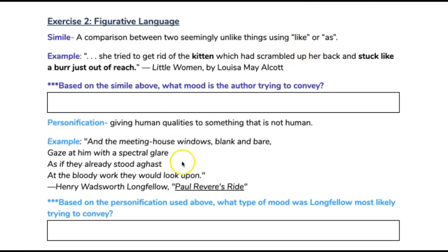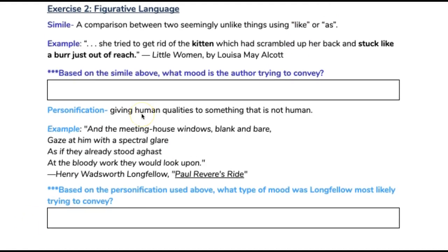Now let's look at another example — this time personification. Personification is giving human qualities to something that is not human. Here's an example from Paul Revere's Ride: 'In the meeting house windows, blank and bare, gaze at him with a spectral glare, as if they already stood aghast at the bloody work they would look upon.'